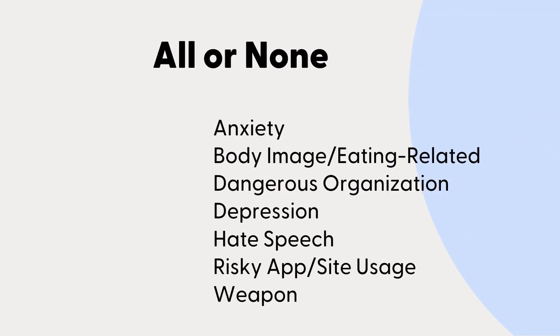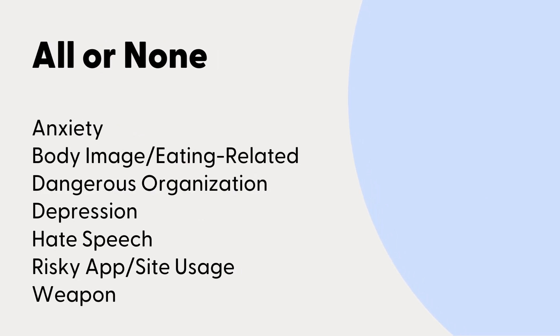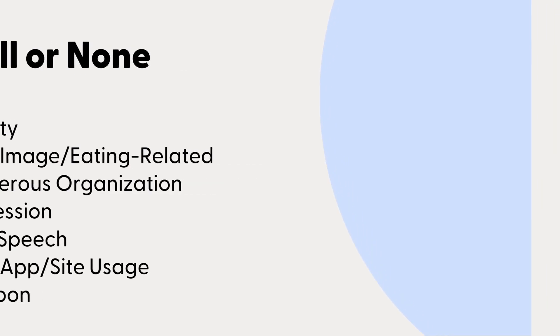The first thing to note is we have three levels of alert abuse types. Our first group of abuses are binary abuses. Our system is looking for the abuse to be present or not and doesn't take severity into consideration.